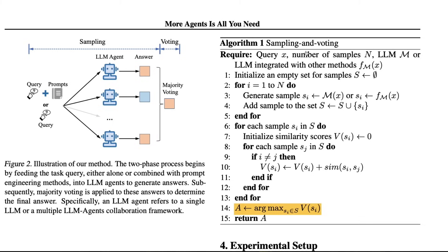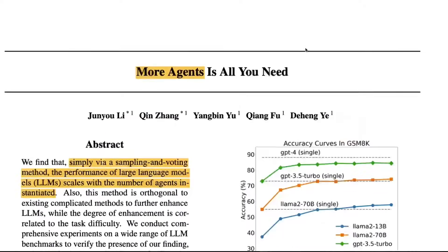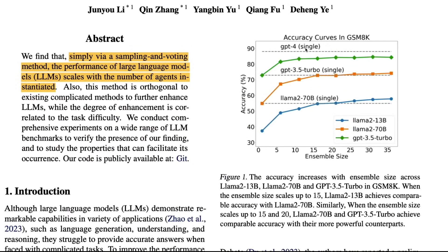You cannot have 10 low-knowledge models stacked together to perform like one high-knowledge model. What you can do is stack 10 lower-knowledge models to get closer to one single higher-knowledge model. Like a sports team, this paper suggests it's not about the weakest link but the strongest link that pulls things forward — because it uses voting. This explores interesting research avenues for model deployment. Their code is available to try with LLaMA 2, GPT-3.5 Turbo, and GPT-4.